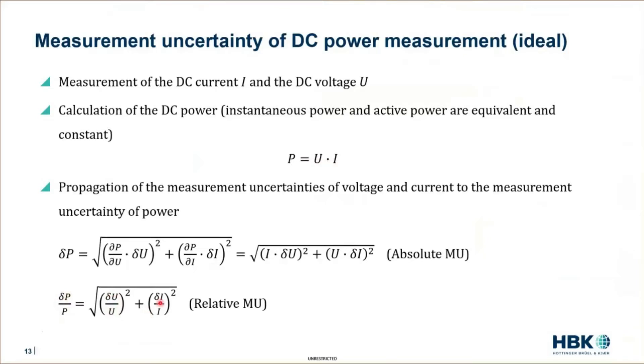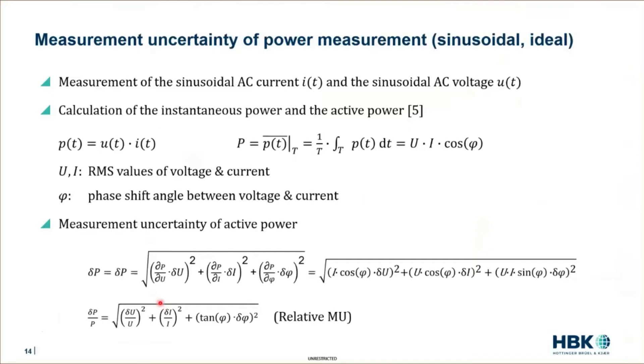You can also do that for the easy example of sinusoidal AC quantities. So ideal sinusoidal AC quantities. Then, of course, the phase shift between voltage and current is also here included in the formula. But this is, of course, nice and important.